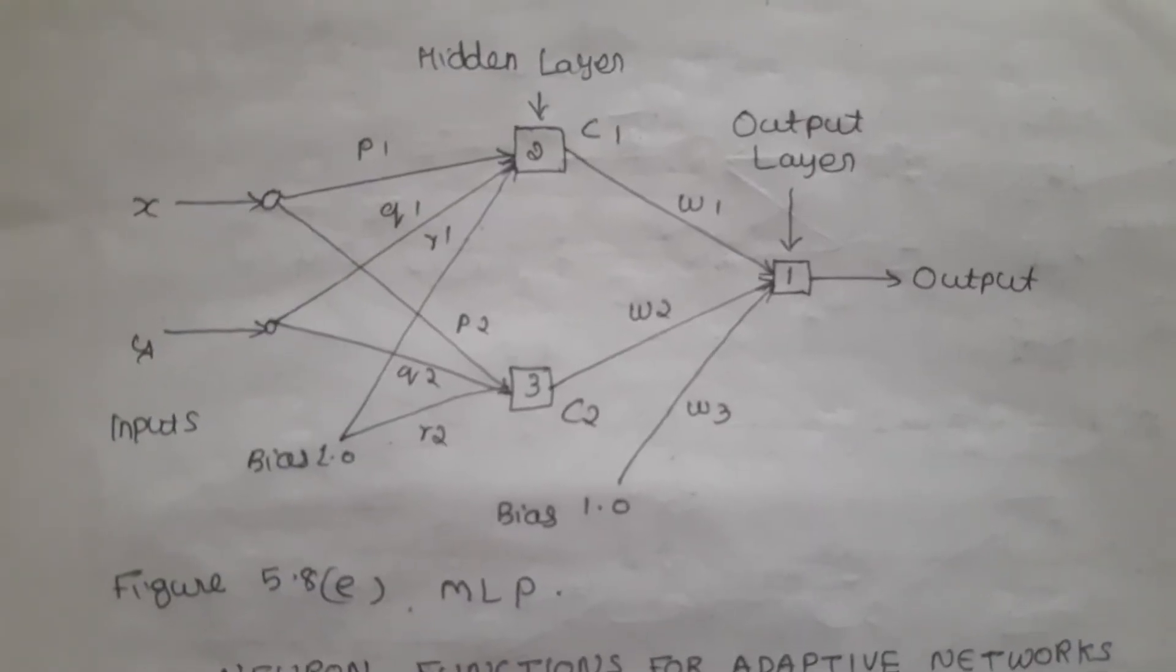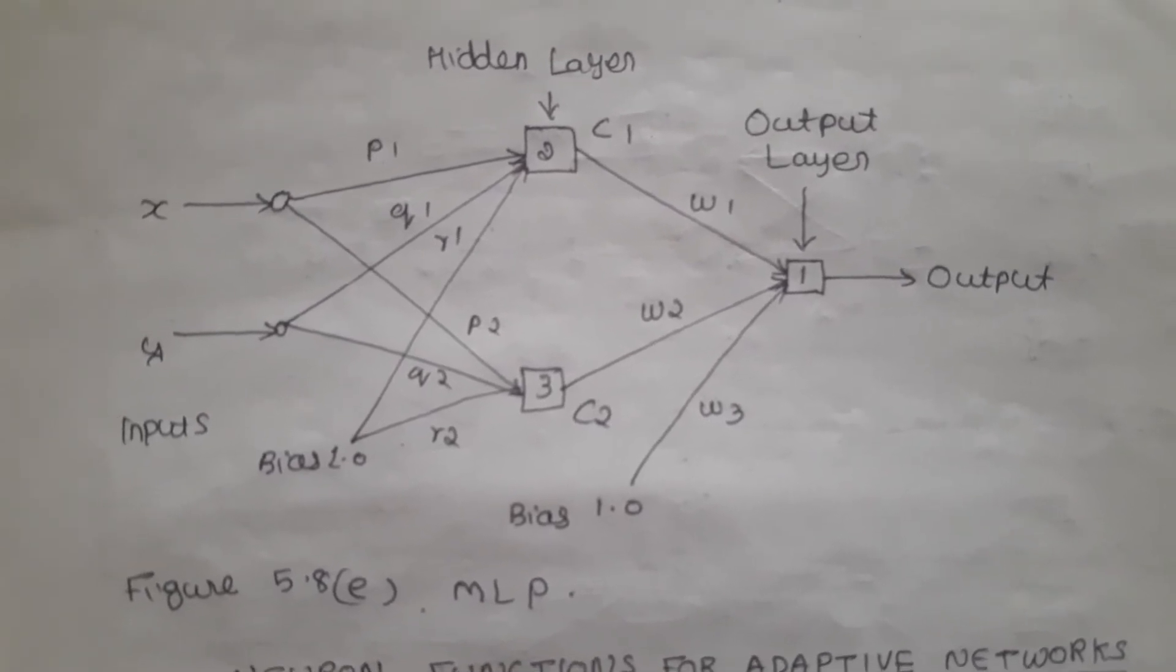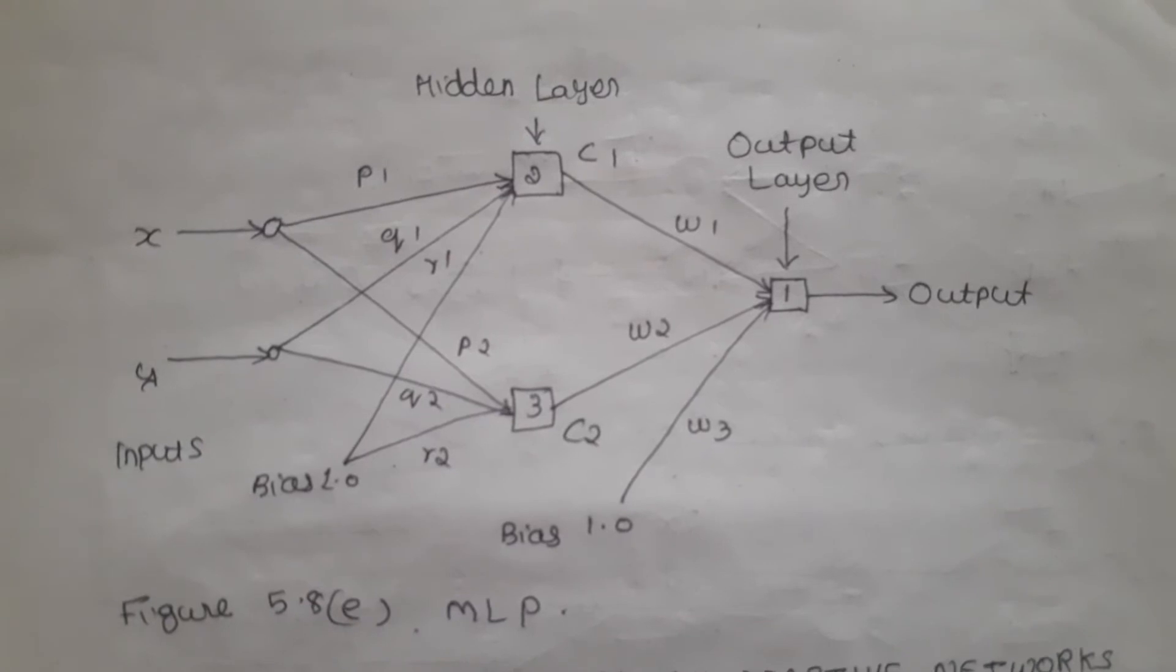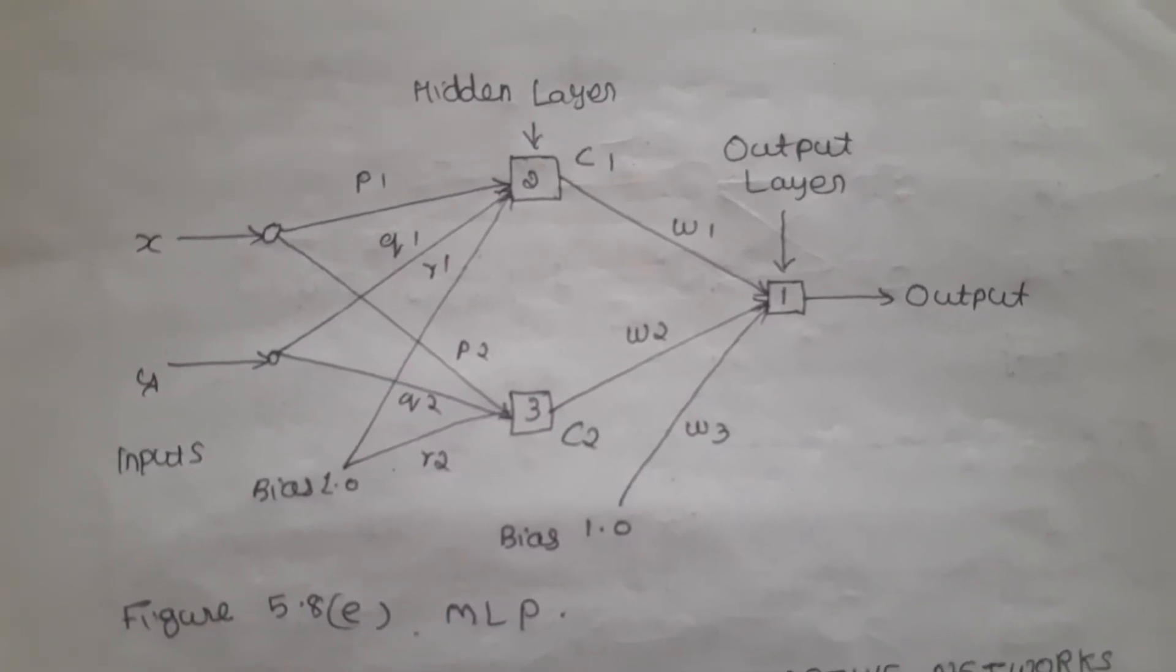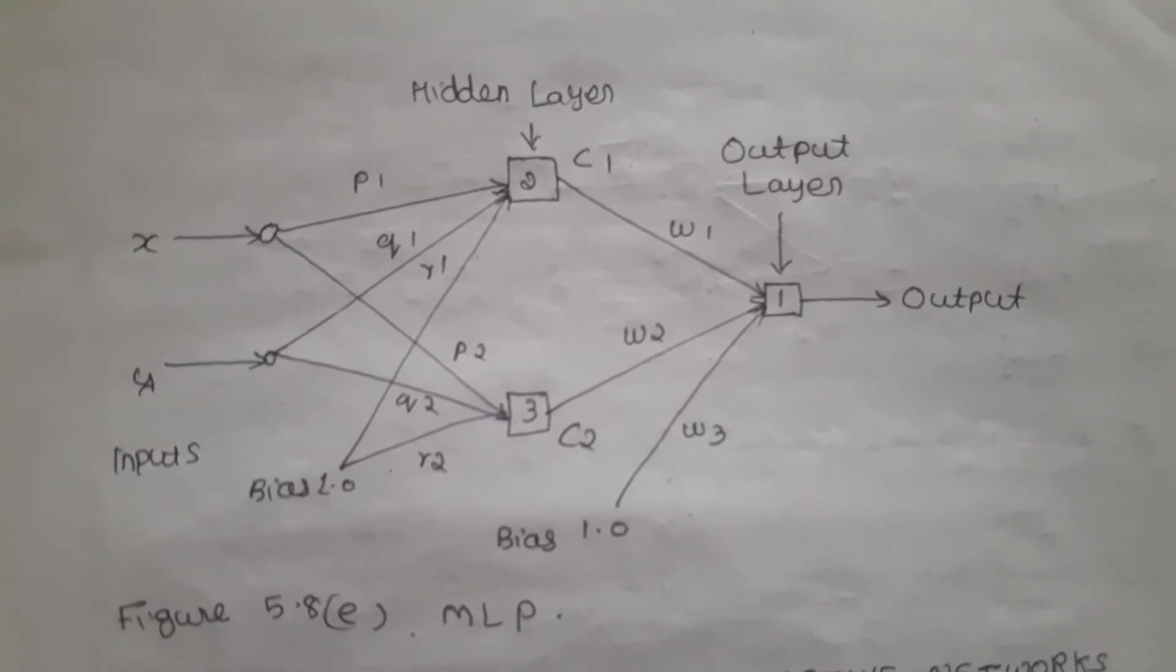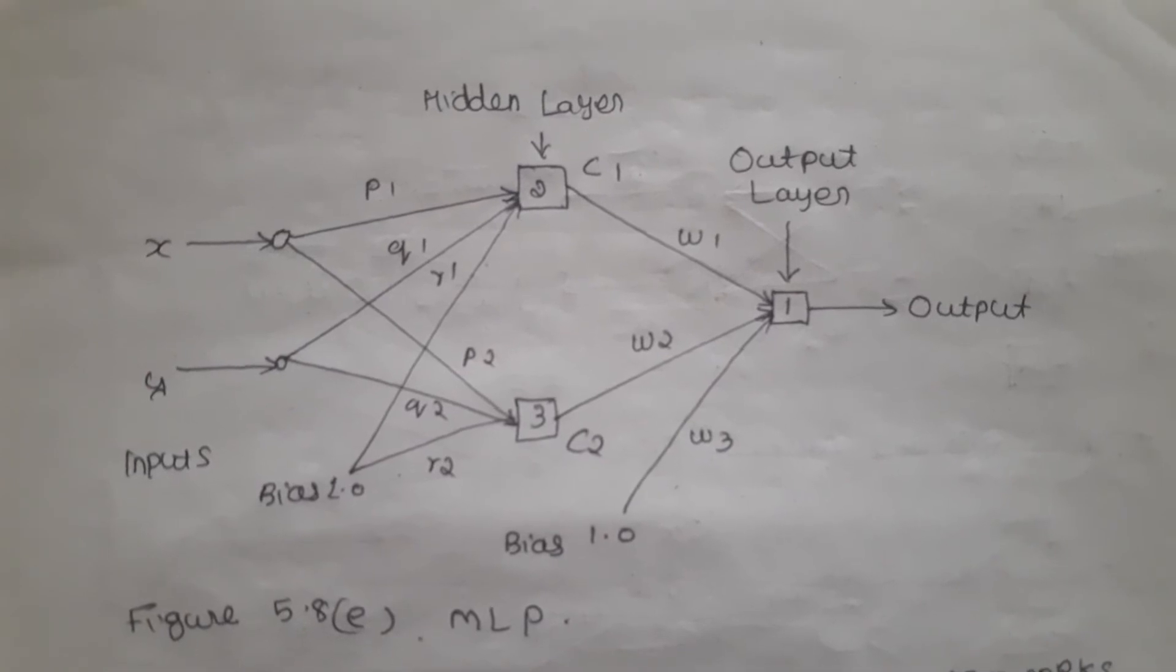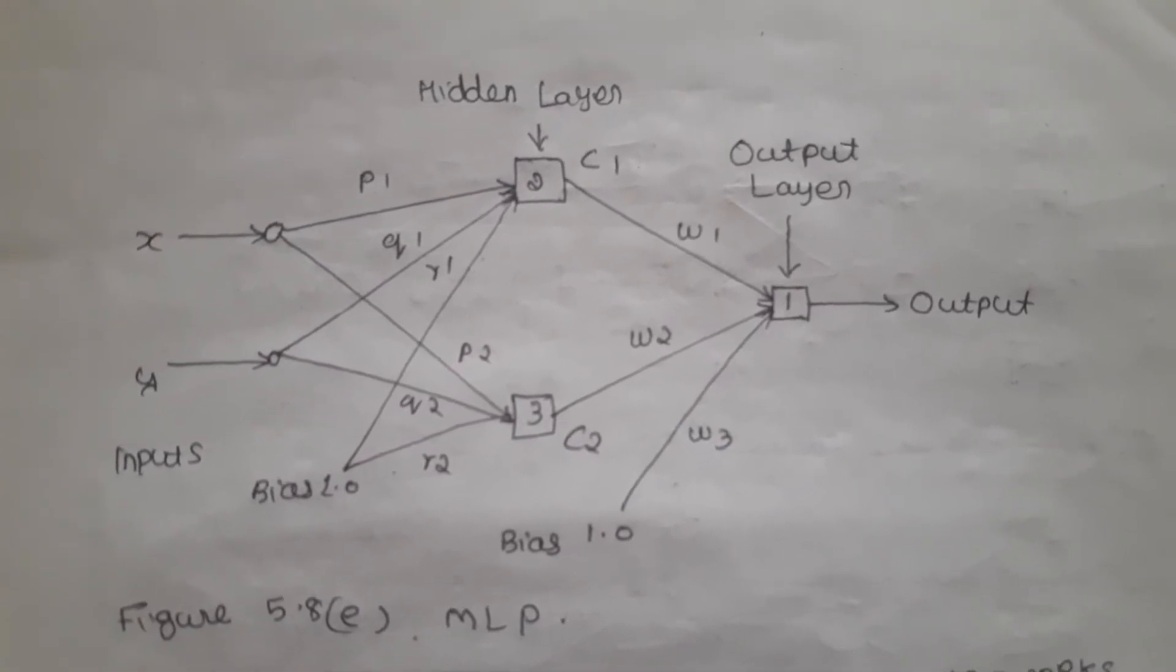Let us see how a multi-layer perceptron looks like. In the hidden layer C1 is generated using P1, Q1, R1 and X that is C1 is equal to P1 X plus Q1 Y plus R1 and C2 is equal to P2 X plus Q2 Y plus R2. Where R1 and R2 are the bias values.